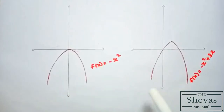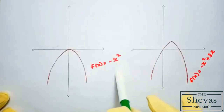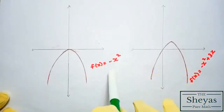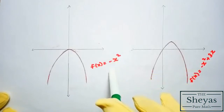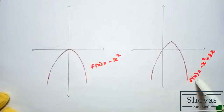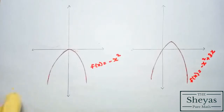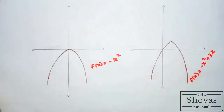These are again examples of quadratic function graphs. Here this is the graph of f(x) = −x². Because of the negative sign, the graph is inverted u-shaped. Again, this is the graph of f(x) = −x² + 3x, which is also an inverted u-shaped graph.